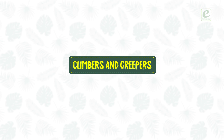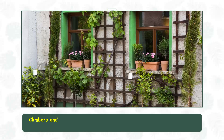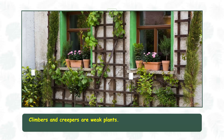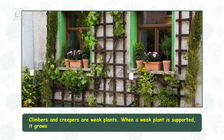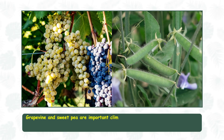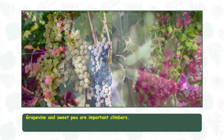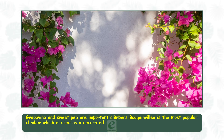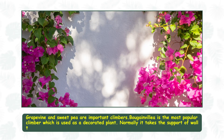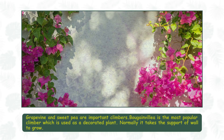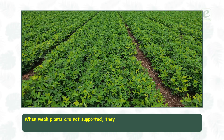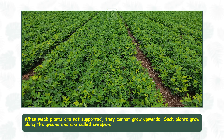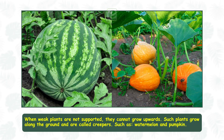Climbers and creepers. Climbers and creepers are weak plants. When a weak plant is supported, it grows upward. Grapevine and sweet pea are important climbers. Bougainvillea is the most popular climber, which is used as a decorative plant. It normally takes the support of a wall to grow. When weak plants are not supported, they cannot grow upwards. Such plants grow along the ground and are called creepers, such as watermelon and pumpkin.